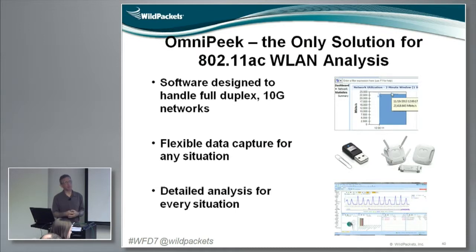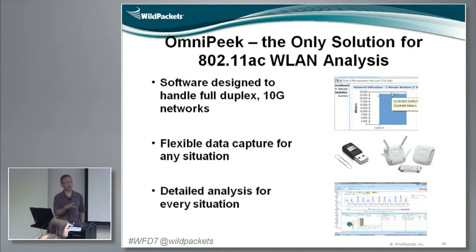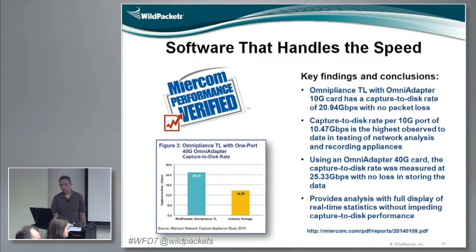We're already analyzing 10 gigabit per second wired networks. We can write to disk at 25 gigabits per second from these wired networks. So OmniPeak is tuned for speed. When we send it wireless packets, we're actually making it a lot easier on OmniPeak because it's really designed to do a whole lot more than that.